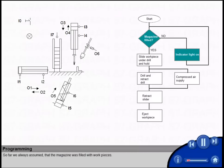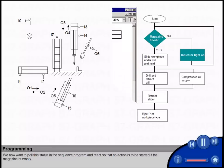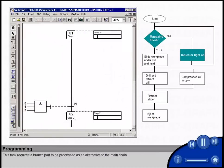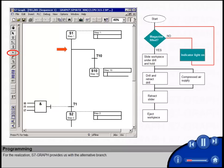So far, we always assumed that the magazine was filled with workpieces. We now want to poll this status in the sequence program and react so that no action is to be started if the magazine is empty. This task requires a branch part to be processed as an alternative to the main chain. For the realization, S7-GRAPH provides us with the alternative branch.